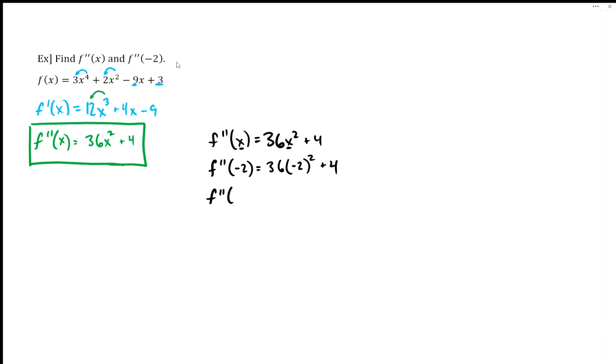And then now we'll simplify. So the second order derivative at negative 2 is equal to 36. Negative 2 squared is going to be positive 4, and then plus 4.